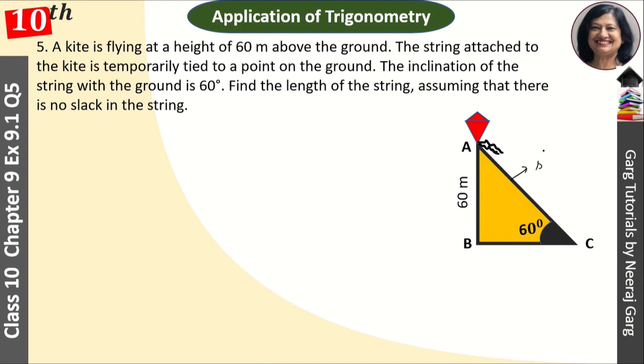What is this? This is our string. This is the string from point C and this is the ground with 60 degree angle.